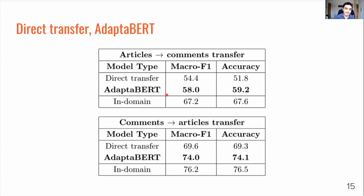Evaluating direct transfer and AdapterBERT for the bias detection task on the Reddit data we collected, we evaluate both articles-to-comments transfer and comments-to-articles transfer. We find comments-to-articles transfer tends to perform a lot better than articles-to-comments transfer. We obtain in-domain F1 scores of around 67% in the articles-to-comments case but around 76% for the comments-to-articles case. This indicates that political bias in social media comments is actually quite a good predictor of the bias in the news articles that they're reacting to, which is a line of thinking that hasn't really been explored in the literature so far.